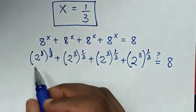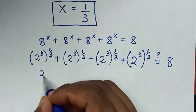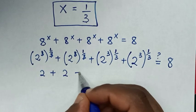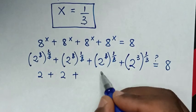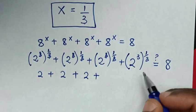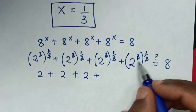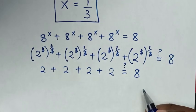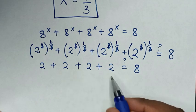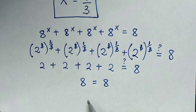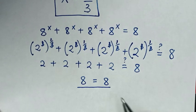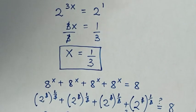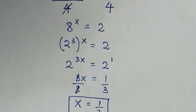The 3 in the exponent and the 3 in the root will cancel, so it will be 2 power 1, which is 2. Then 2 plus 2 plus 2 plus 2 is 8, which is equal to 8. Therefore the left side and right side are equal, so it is confirmed that the value of x is 1 over 3. Thank you, see you in the next video, bye.